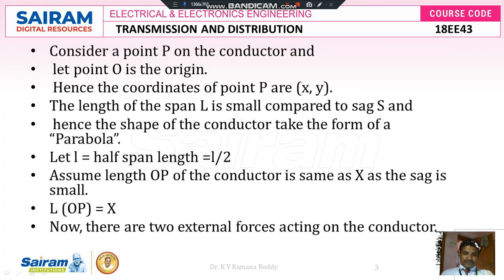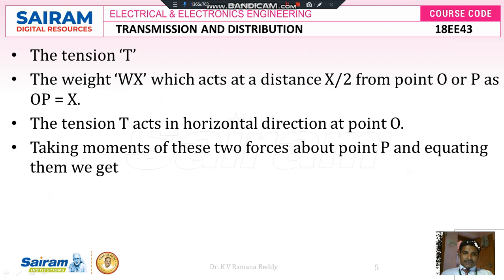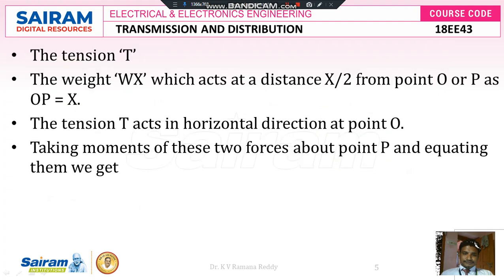There are two external forces acting on the conductor: one force acts in the horizontal direction and another in the vertical direction. The weight wx acts at a distance x/2 from point O or P — that is, at the center of wire OP. The overall length from O to P is x. The tension T acts in the horizontal direction at point O.